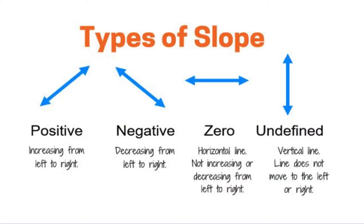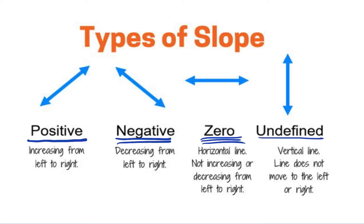There are 4 types of slope. If the graph is increasing from left to right, there is a positive slope. If the graph is decreasing from left to right, the slope is negative. If the graph is horizontal, the slope is 0. And if the graph is a vertical line, the slope is undefined or no slope.